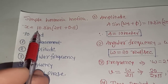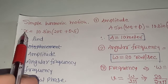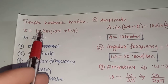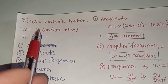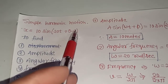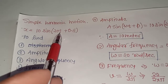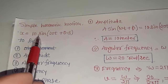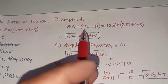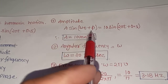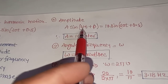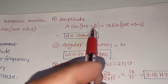First, you have to understand the equation: the variable represents displacement, the coefficient represents amplitude, omega is called the angular velocity, the constant term is called the phase, and t is called the instant of time. So the complete data is given.